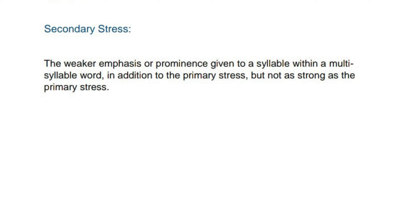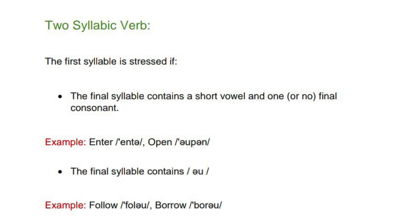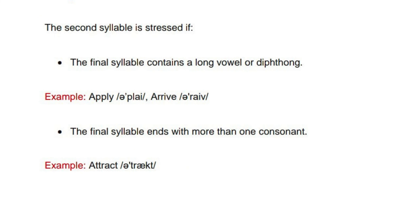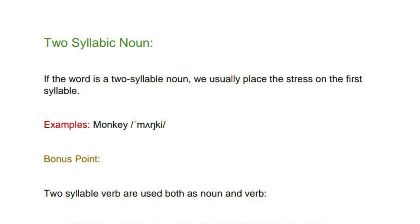Two-syllable verbs: the first syllable is stressed if the final syllable contains a short vowel and one or no final consonant — examples: 'enter', 'open'. If the final syllable contains a diphthong, the first syllable is also stressed — example: 'follow', 'borrow'. The second syllable is stressed if the final syllable contains a long vowel or diphthong — examples: 'apply', 'arrive'. The final syllable is also stressed if it ends with more than one consonant — example: 'attract'.